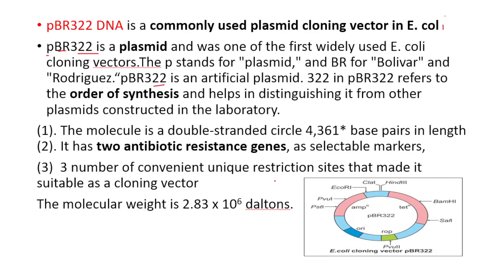PBR322 is a double-stranded plasmid with 4361 base pairs. It has two antibiotic resistance genes as selectable markers: ampicillin resistance genes and tetracycline resistance genes. It has different restriction sites for restriction enzymes. The molecular weight of the PBR322 vector is 2.83 × 10⁶ Daltons.